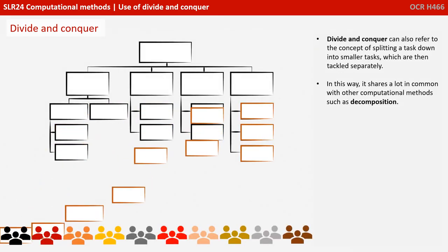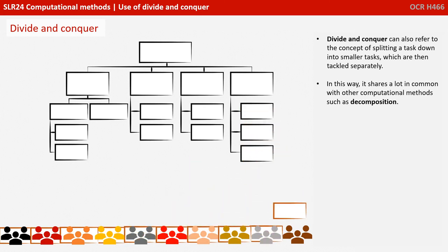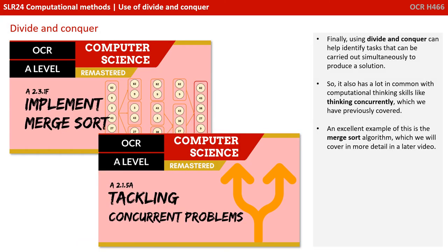Divide and conquer can also refer to the concept of splitting a task down into smaller tasks which are then tackled separately. In this way, it shares a lot in common with other computational methods such as decomposition. Using divide and conquer can also help identify tasks that can be carried out simultaneously to produce a solution, so it has a lot in common with the computational thinking skill of thinking concurrently, which we've previously covered.